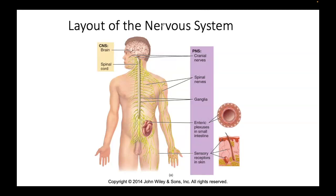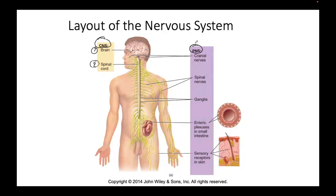When we look at the neural system, on the left-hand side we have the CNS, which stands for the central neural system. On the right, we have the PNS, which stands for peripheral neural system. The central neural system is made up of only the brain and the spinal cord and nothing else. Anything other than the brain and the spinal cord is part of the peripheral neural system — peripheral meaning it's in the periphery, coming off of the brain or the spinal cord.